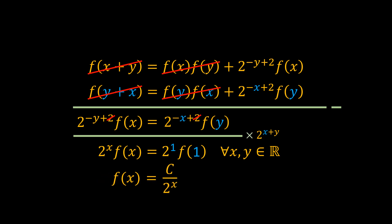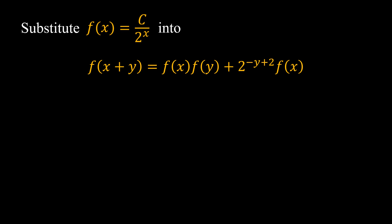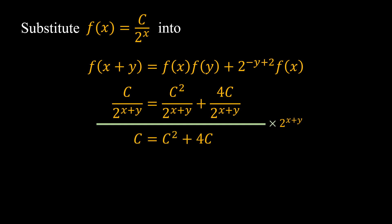This means f(x) = c / 2^x. Now we find the value of the suitable constant c by substituting this f(x) into the original functional equation. Multiplying through by 2^(x+y), we get c = c² + 4c.